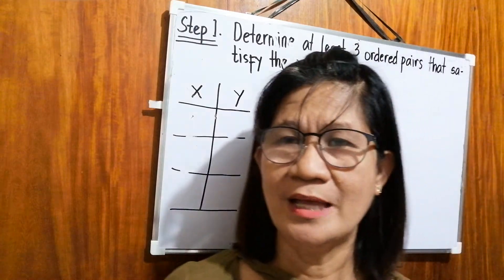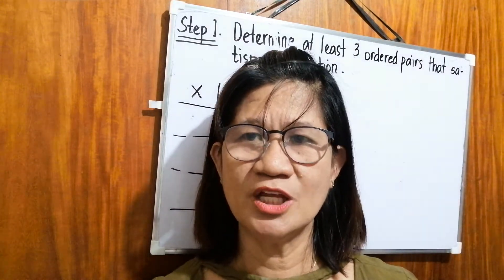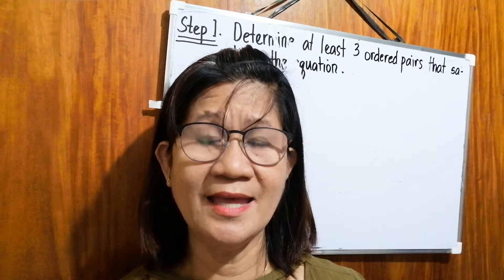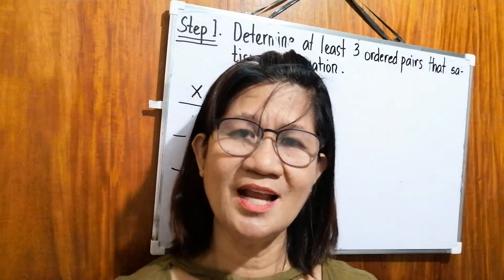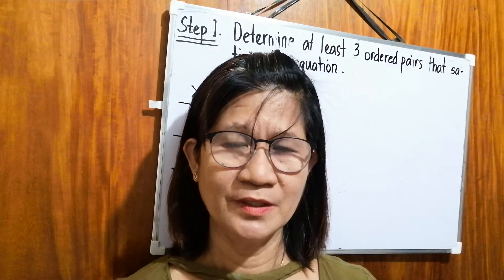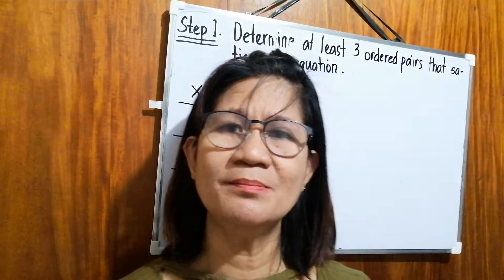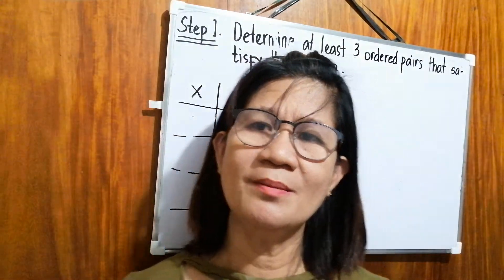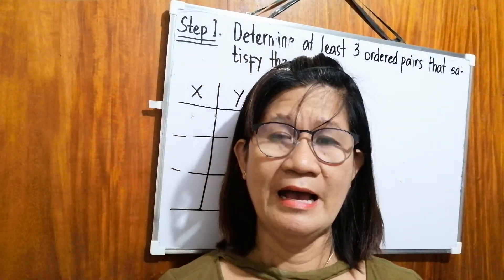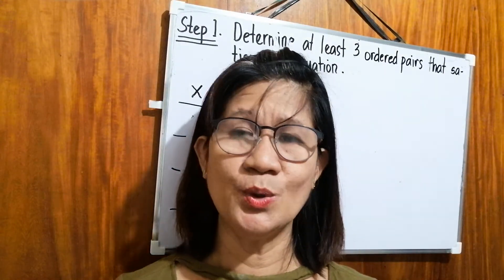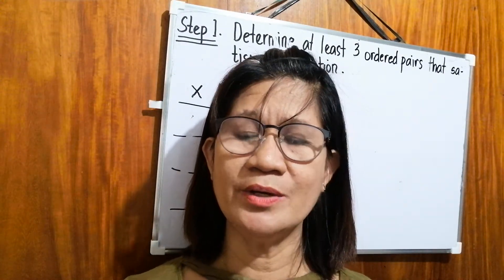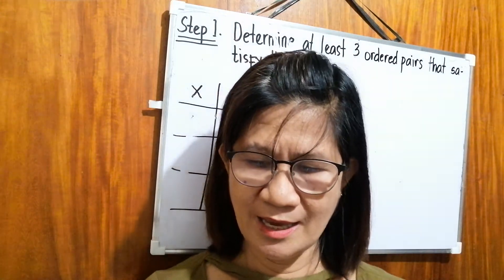So, the graph of a linear equation in two variables is a straight line, and this will be drawn in our Cartesian plane. And you need materials like graphing paper and ruler. But if you don't have a ruler, you can use even a straight edge.